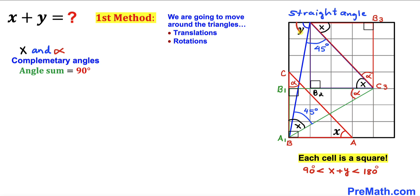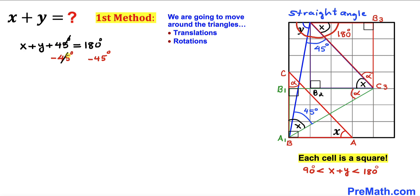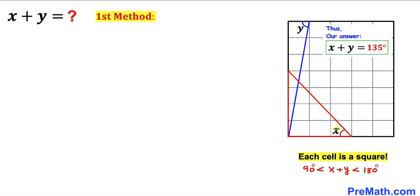Let's focus on this whole straight angle, which is 180 degrees. We can see it consists of three individual angles: angle x, a 45-degree angle, and angle y. So angle x plus angle y plus 45 degrees equals 180 degrees. Subtracting 45 degrees from both sides, our angle x plus y turns out to be 135 degrees.